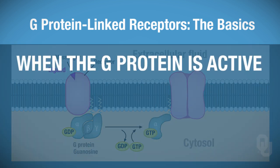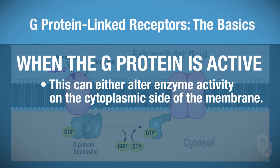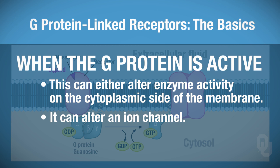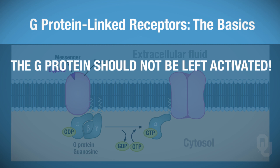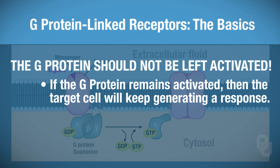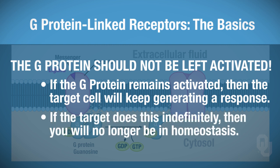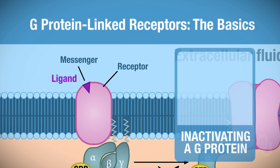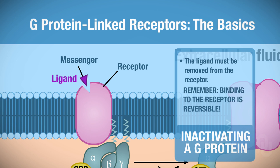When this G-protein is active, it can either alter enzyme activity on the cytoplasmic side of the membrane, or it can alter an ion channel. Now, you shouldn't leave your G-protein activated, because if it remains activated, the target cell keeps making a response—and you don't want the target cell to continue that indefinitely, because then you're no longer in homeostasis. To inactivate a G-protein, the ligand must be removed or must fall off the receptor. Remember that binding to a receptor is reversible.